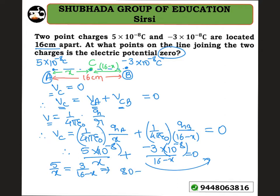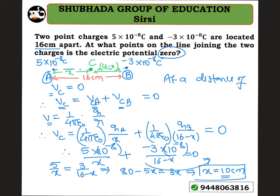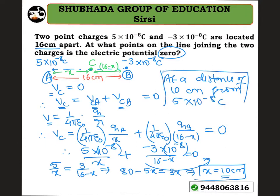Solving this equation: 5 into (16 minus x) equals 3x, giving 80 minus 5x equals 3x, so x equals 10 centimeters. Therefore, the electric potential is zero at a distance of 10 centimeters from the 5 into 10 to the power of minus 8 coulomb charge.